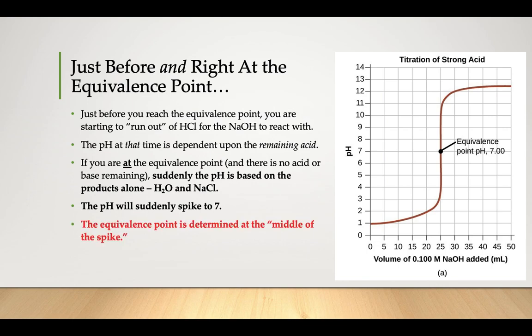The way you can figure out what the equivalence point is by looking at one of these graphs is to find that middle of the spike. So when you look at that vertical line there, you kind of find the middle of that vertical line, and that's where your equivalence point is going to be.